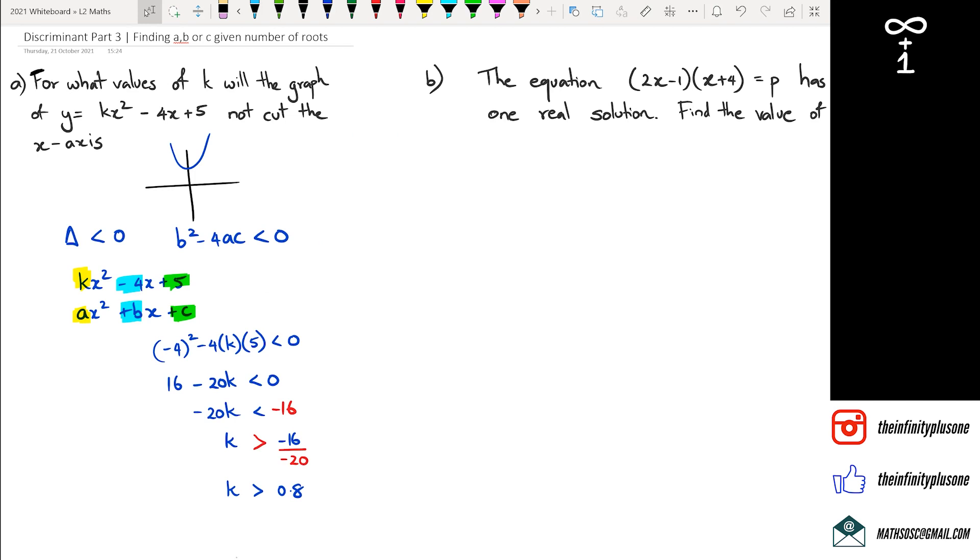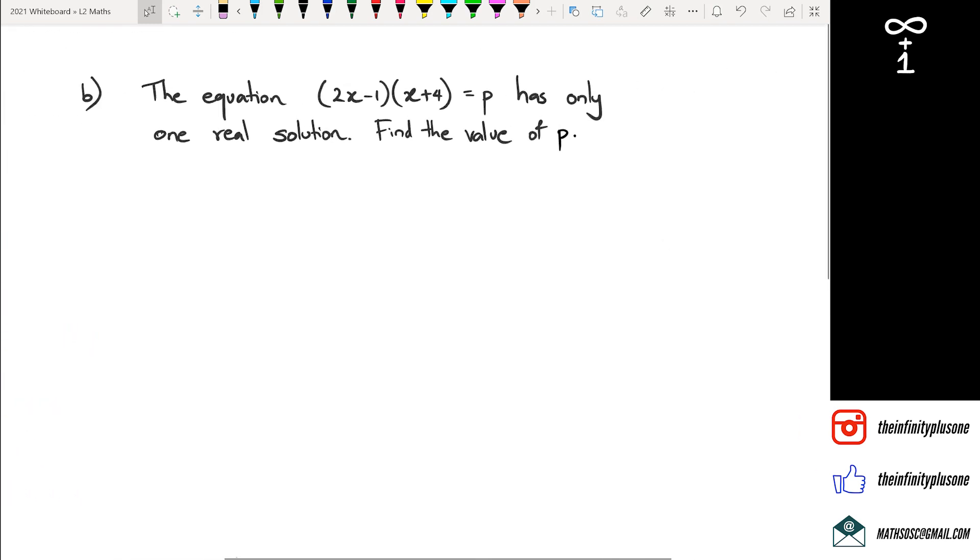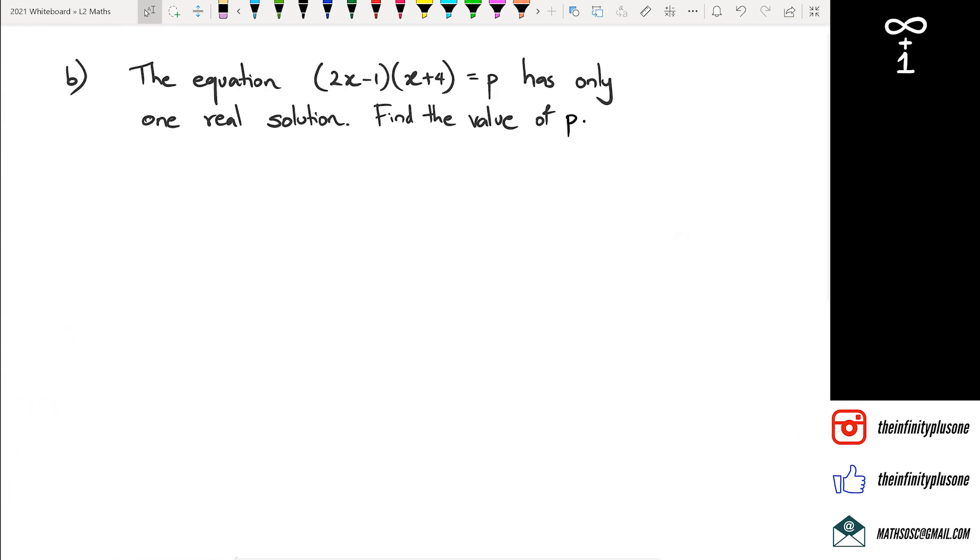Now we go to another variety of this question, which is question B, where you're given a quadratic that equals to p. And we want to figure out so that this equation only has one real solution. So I guess the first thing we need to do is we need to expand the brackets and rearrange everything so that we have it in that nice quadratic equation, general quadratic equation formula. Oh, that's a handful. I think what I was trying to say was rewriting it as a general equation of a quadratic.